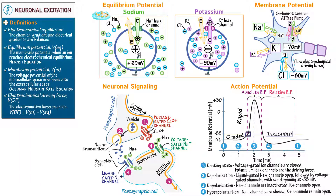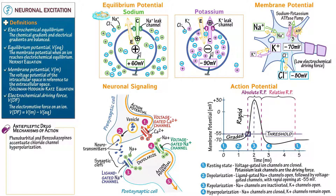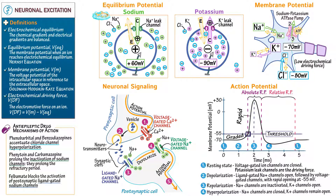As a clinical corollary, let's consider some anti-epileptic drug mechanisms of action. They block the excessive or asynchronous neuronal discharges that generate seizures. First, indicate that phenobarbital and benzodiazepines accentuate chloride channel hyperpolarization. Then indicate that phenytoin and carbamazepine bind to and prolong voltage-gated sodium channel inactivation — they lengthen the refractory period. Finally, indicate that one of the key roles of felbamate is that it blocks the activation of postsynaptic ligand-gated sodium ion channels, preventing postsynaptic membrane depolarization. We learn more about anti-epileptic drugs elsewhere. This concludes our diagram.